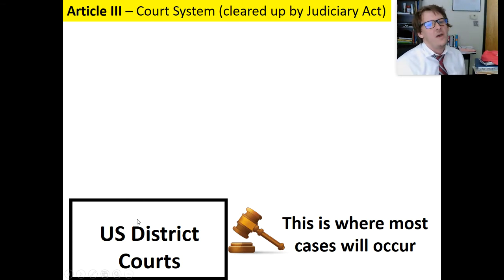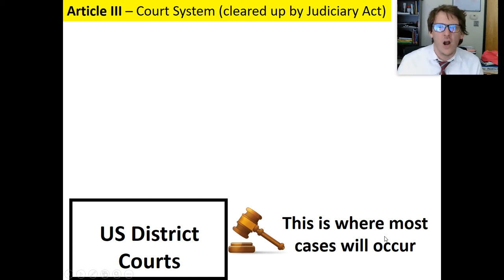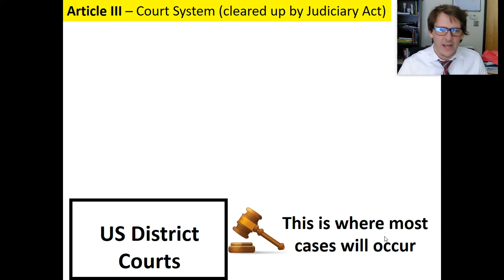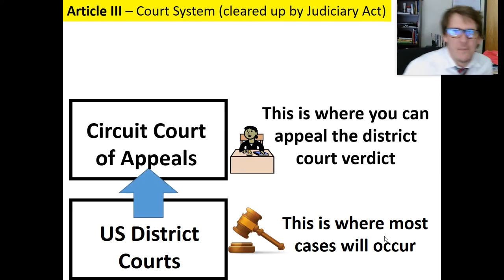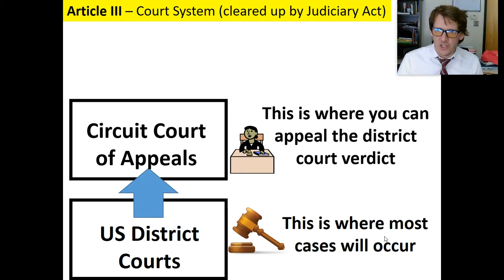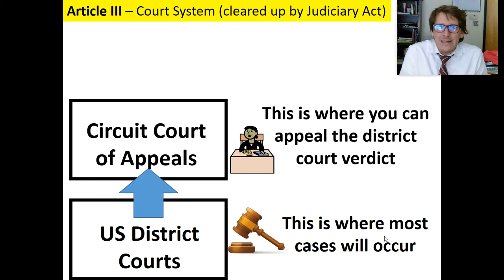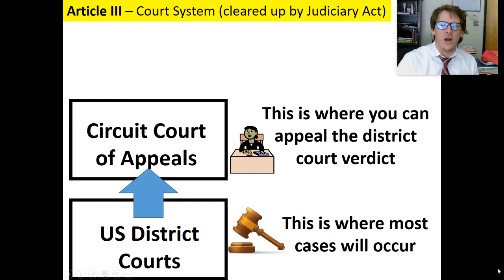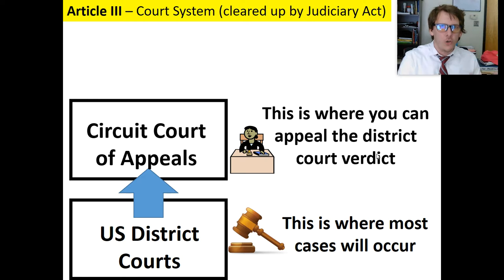Here's how it works. They create U.S. District Courts, and this is where most cases will go. If there's a crime, a civil case, if it's federal, it goes to U.S. District Court. This is explained in the Constitution. Then, if you don't like your decision in the U.S. District Court — say they find you guilty of murder — you can appeal to the Circuit Court of Appeals. This is written in Article 3, which explains our judicial branch.